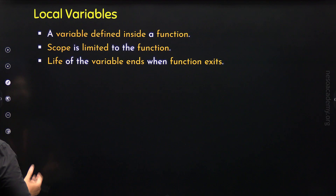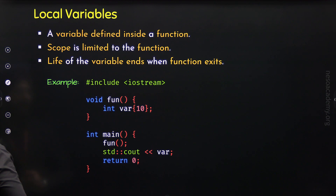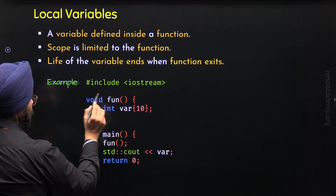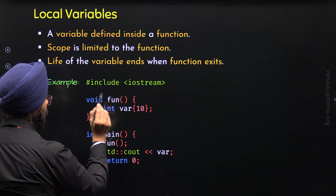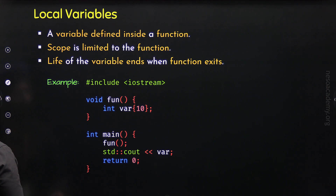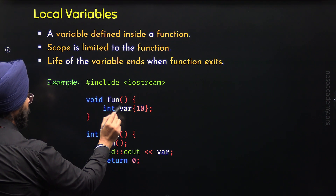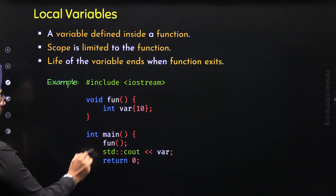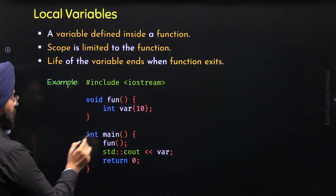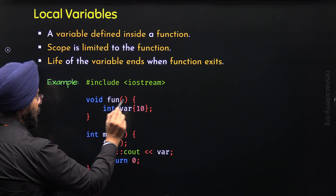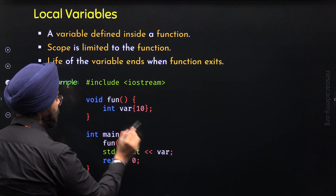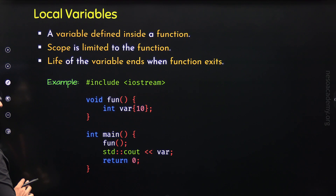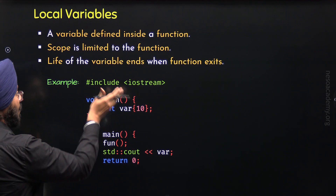Here is an example program. I have defined the function `fun` with return type void. Inside it, there is a variable `var` of type integer with value 10 — this is the local variable. Its scope is limited to this function, so we cannot access it outside. When this function is called, `var` is created with value 10. After the function completes, this variable will be destroyed.